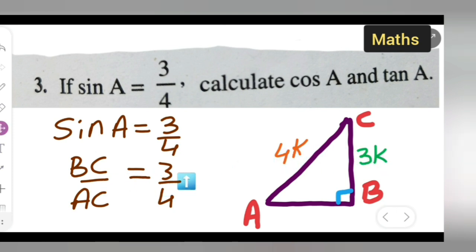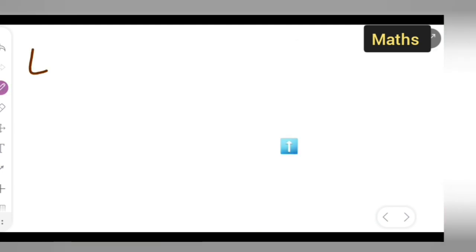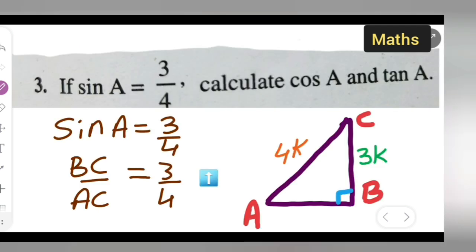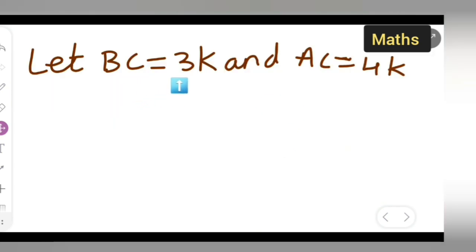We take BC to be 3k and AC to be 4k. So let BC equal 3k and AC equal 4k.